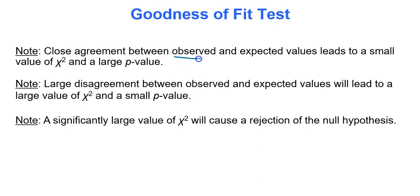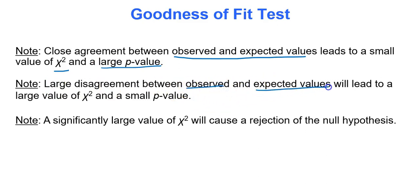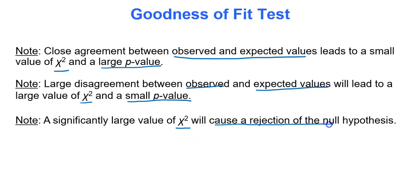If you have close agreement between the observed and expected frequencies, you'll get a small value of chi-squared and a large p-value. If you see large disagreement, this leads to a large value of chi-squared and a small p-value. The two are inversely related — a large test statistic means a small p-value, and vice versa. Therefore, a significantly large test statistic with a really low p-value will cause rejection of the null hypothesis.